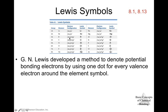Boron is from family three, so it has three valence electrons. We write boron as B with three dots, each representing one of those three valence electrons. Aluminum is also family three — we write Al for aluminum and draw three dots around it, which can be placed in any of the four positions around the symbol.